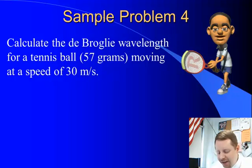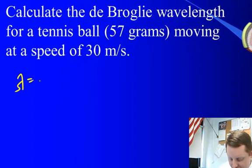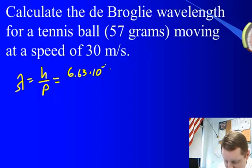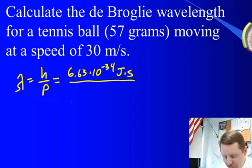Finally, let's calculate the de Broglie wavelength for a tennis ball, 57 grams of mass, moving at a speed of 30 meters per second. Well, the de Broglie wavelength, lambda, is Planck's constant divided by the momentum of the moving particle, or 6.63 times 10 to the minus 34 joule seconds divided by momentum.